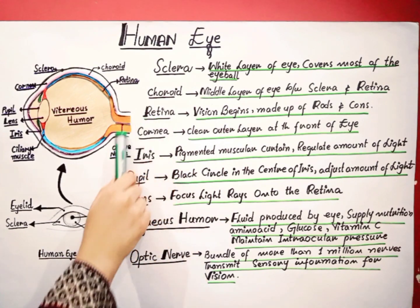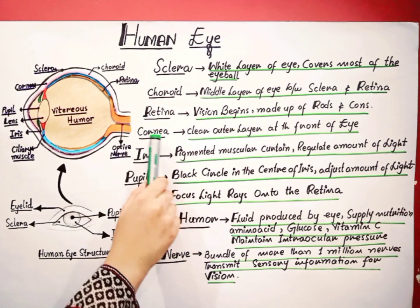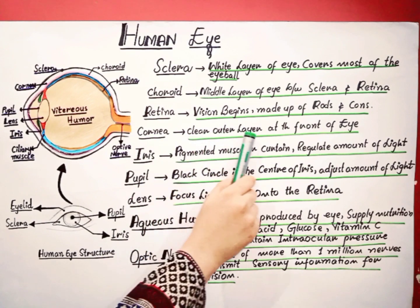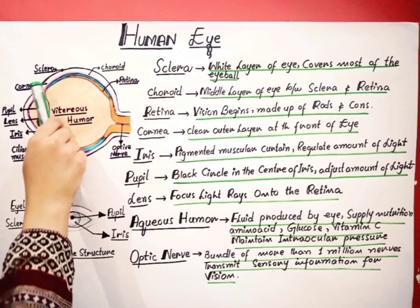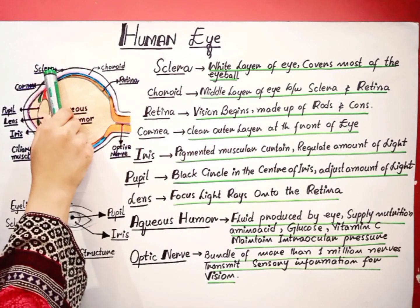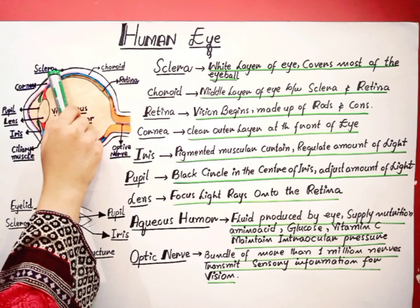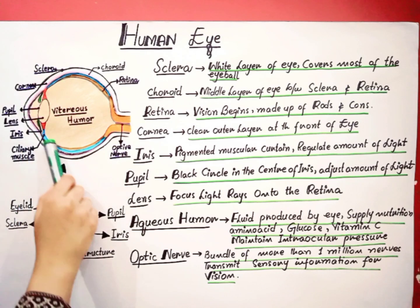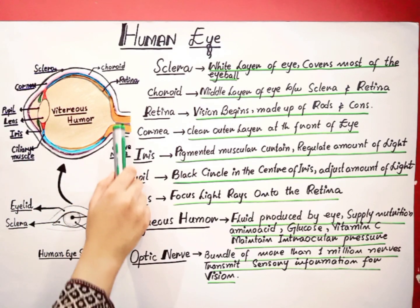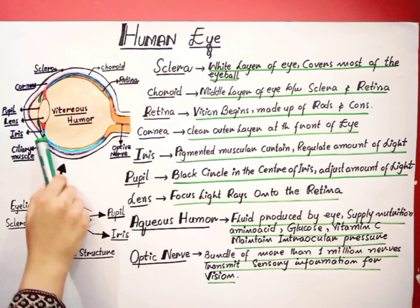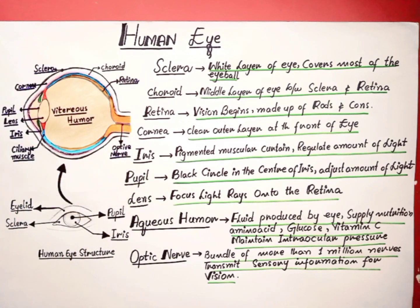Now we have the cornea. The cornea is the clear outer layer at the front of the eye, just after the sclera. It is the transparent, clear outer part of the eye. An important function of the cornea is that, along with the sclera, it serves as a barrier against dirt, germs, and other particles which are harmful to our eyes.